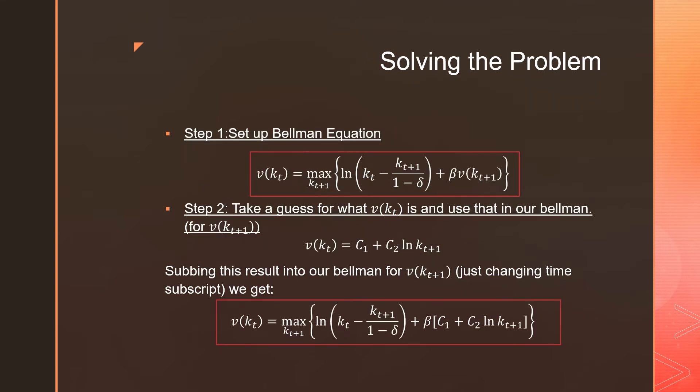So step number one, we're going to set up the Bellman equation. Boom, there it is. Step number two is that we take the guess for what V of K is and use it in our Bellman equation for V(K_{T+1}). So our guess for V(K_T) is the following: That's going to be C_1 plus C_2 times log K_T, right? As in, this guess is congruent with whatever utility function that we have here. Subbing this result into our Bellman for V(K_{T+1}), and note that we're just changing the time subscript, we get the following.